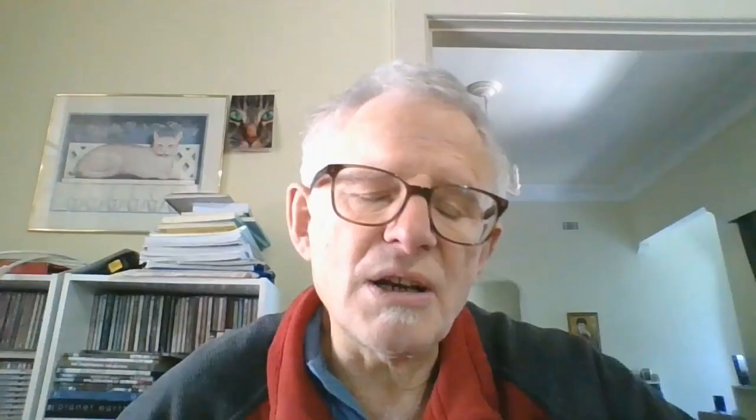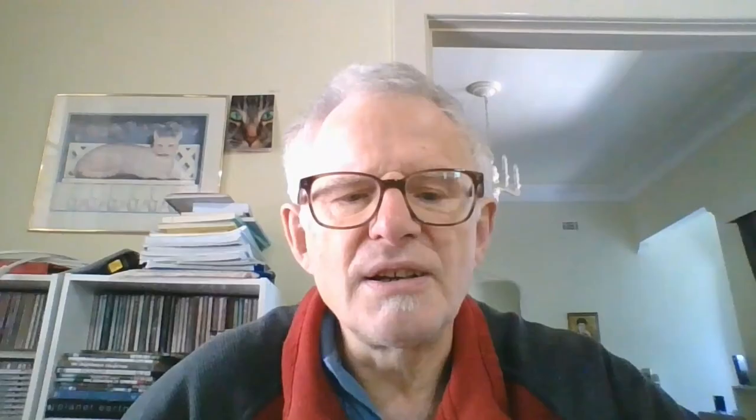To generate the 3N plus 3 iterative sequence, denoted by V0, V1, V2, all the way to VN, where V0 is any integer: VN+1 equals VN divided by 2 for even numbers, and VN+1 equals 3VN plus 3 divided by 2 for odd numbers. When V0 is greater than or equal to 1, the sequence always goes to 3 — or the cycle 3, 6, 3, 6 — and this is the conjecture.